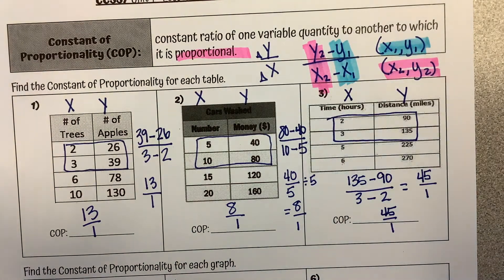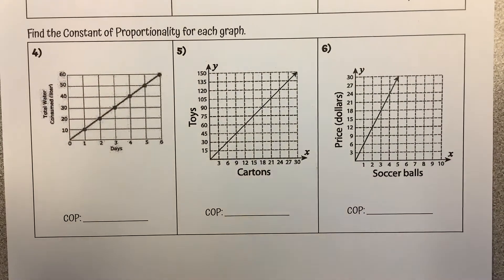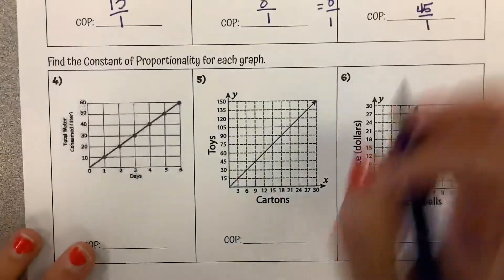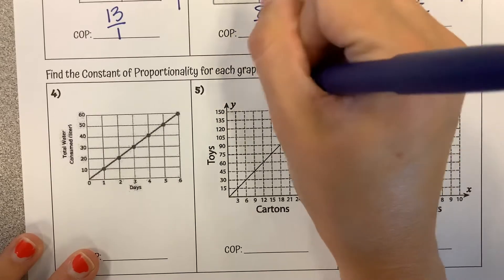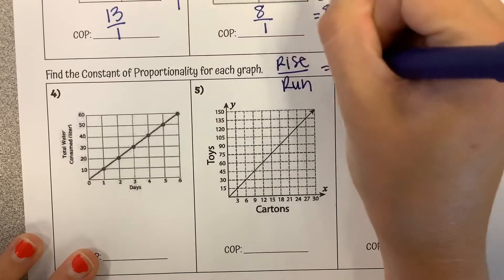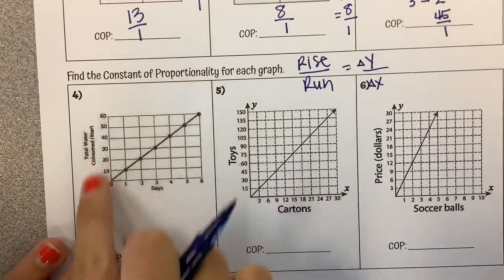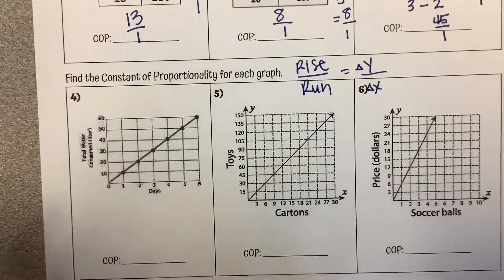All right, so that was how you find it from a table. Let's look at finding it from a graph. So all that I'm looking at here is I'm going to look at what we call the rise over the run, which matches up with still the change in y over the change in x. Because our rise is our y-axis, our run is our horizontal x-axis.